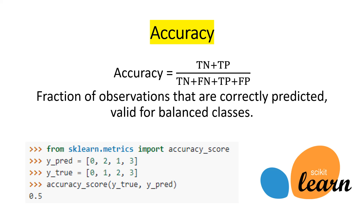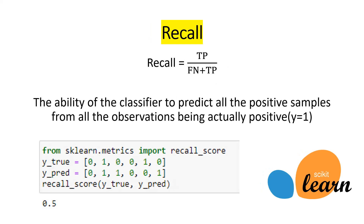Then we have recall, which gives us the True Positive divided by the False Negative plus the True Positive. It is the ability of the classifier to predict all positive samples from all observations that are actually positive, meaning where the true value equals one. It is different from accuracy because we only consider one part of the observations. We can also use scikit-learn to import the recall score and compare true values with predicted values.